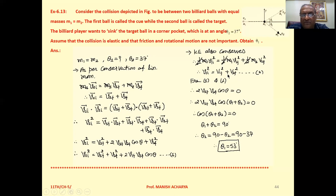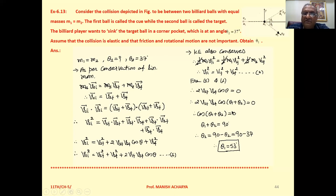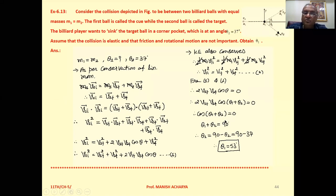Now substitute equation 2 into equation 1. The terms V1f squared plus V2f squared and V1i squared cancel from both sides, leaving: 2 V1f V2f cos theta equals 0. Since 2, V1f, and V2f are all non-zero, it implies that cos(theta 1 plus theta 2) equals 0, where theta is the full angle between V1f and V2f, which from the figure equals theta 1 plus theta 2.